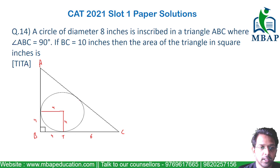If this is 6, then let's assume this is Y, then CY should also become 6. If A to X is X, then A to Y will also be X. So, we are able to find out the length in terms of either 4 plus 6, 6 plus X or X plus 4.